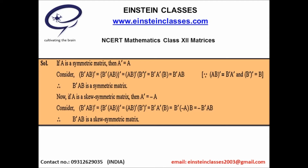Using another theorem, (B')' = B. So (B'AB)' = B' · A' · B. Now using the given condition A' = A, replace A' with A. We get (B'AB)' = B'AB. Hence B'AB is a symmetric matrix.